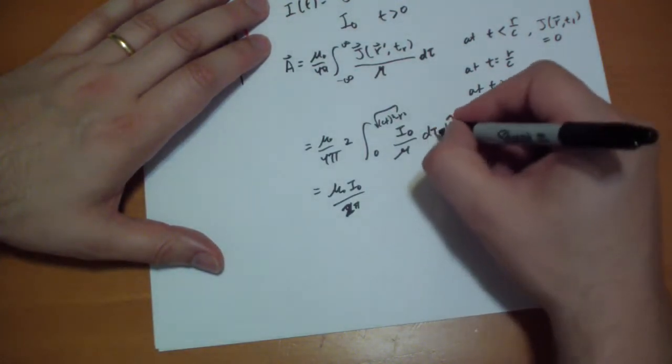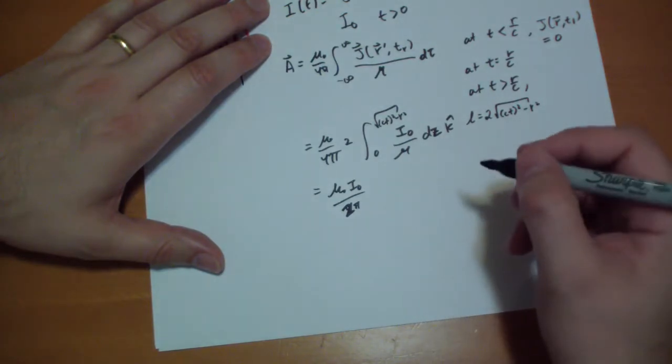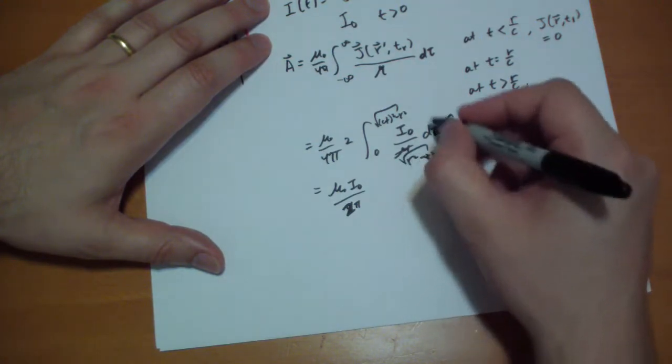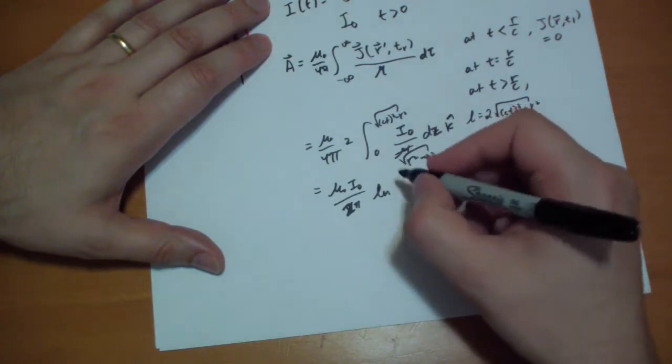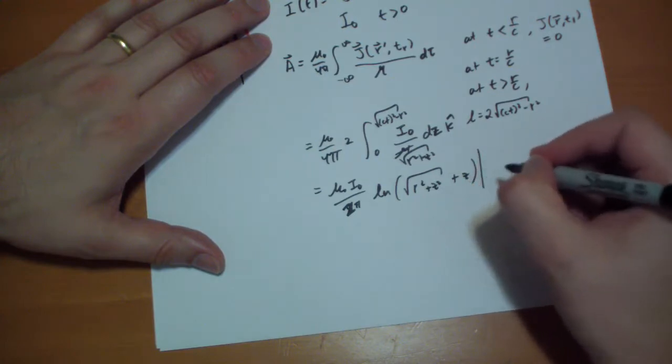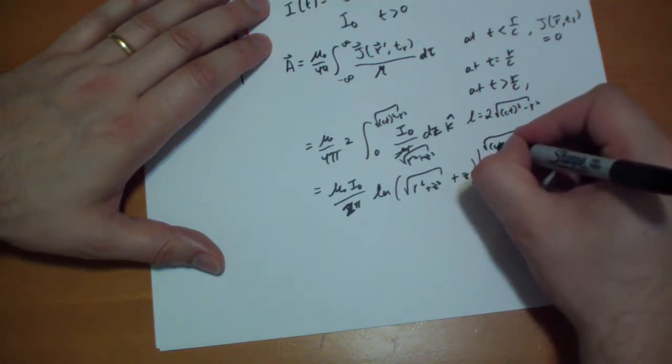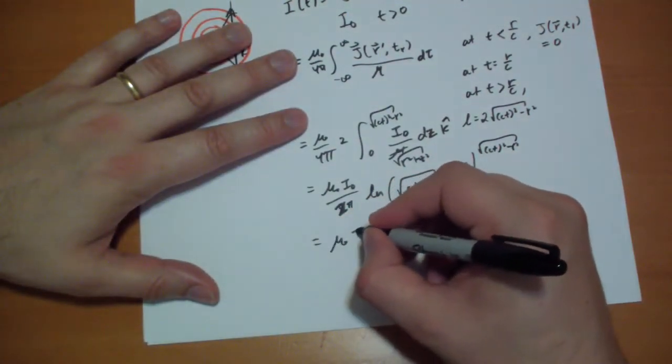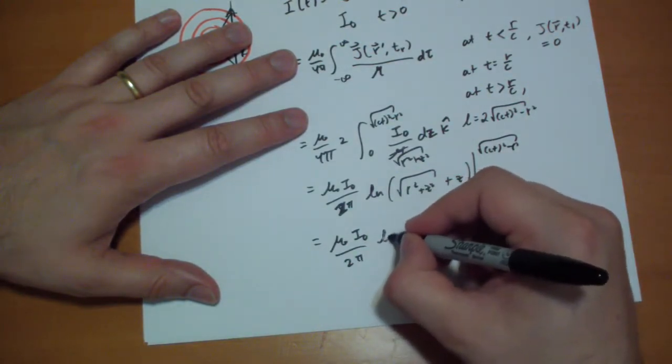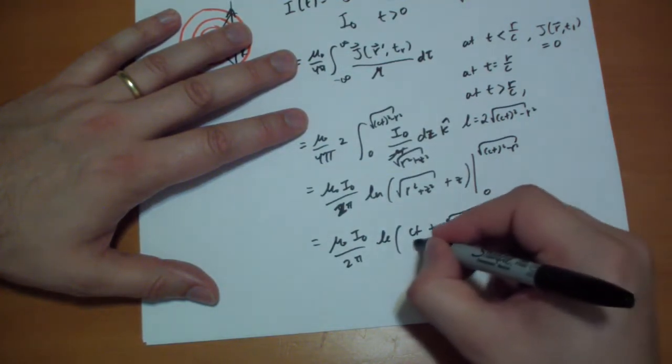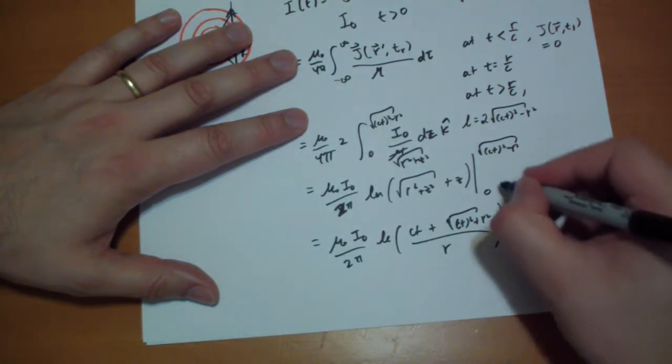And this integral turns out to be, oh, this is tz. This r is just the square root of r squared minus z squared. And so you do this integral and you get the logarithm of the square root of r squared plus, plus z squared. And that's the value between zero and the square root of ct squared minus r squared. And you plug that in and you get mu-naught i-naught over 2 pi log of ct plus square root of ct squared plus r squared over r in the k-hat direction. I forgot the k-hat over here.